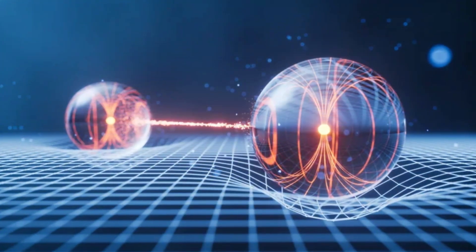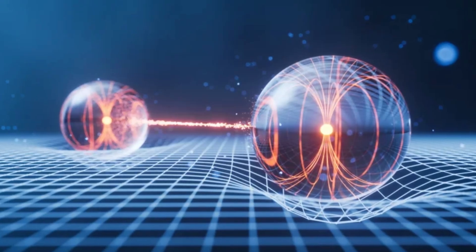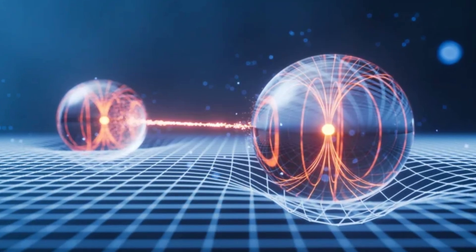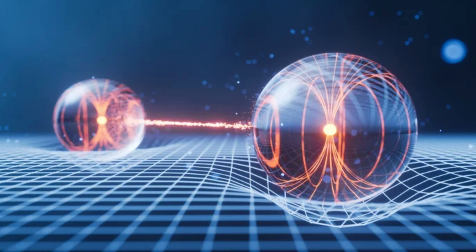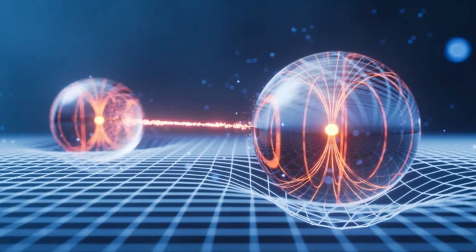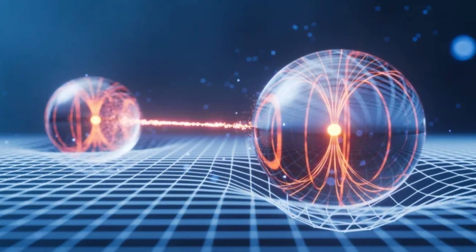Following this logic, gravity should have its own mediating particle, called the graviton. Gravitons would be hypothetical particles, massless and with spin too, responsible for transmitting gravity in a quantum universe.